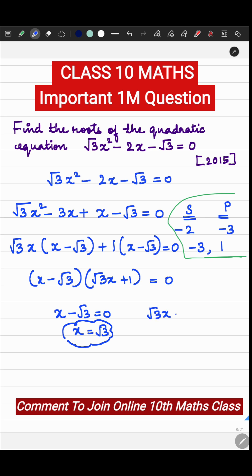The second root is root 3 x plus 1 equal to 0 or root 3 x equal to minus 1 or x equal to minus 1 by root 3. This is your second root. So these are the two roots.